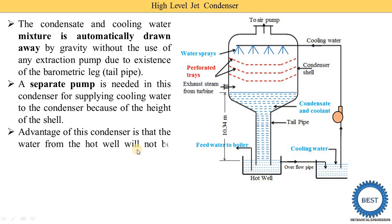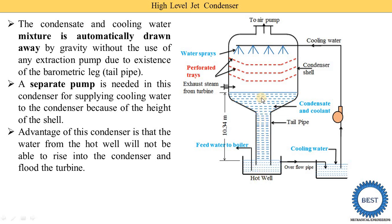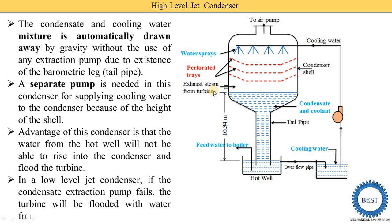An advantage of this condenser is that water from the hot well will not be able to rise into the condenser and flood the turbine. Even if the hot well overflows, the water cannot reach the turbine. In contrast, in a low-level jet condenser, if the extraction pump fails, the turbine will be flooded — water from the hot well overflows the condenser and reaches the turbine.